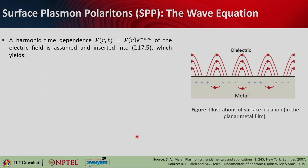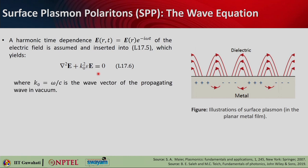Let us see how we can solve this. We can assume a time-harmonic electric field: E(r,t) = E(r)·exp(−iωt). If you put that into the wave equation, it looks like ∇²E + k₀²εE = 0, where k₀ = ω/c is the wave vector of the propagating wave in vacuum. This equation is nothing but the Helmholtz equation.